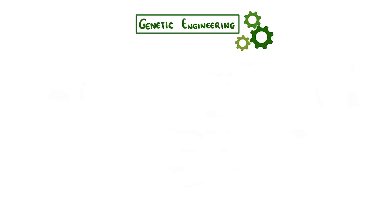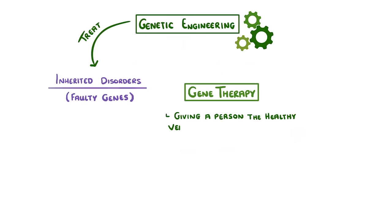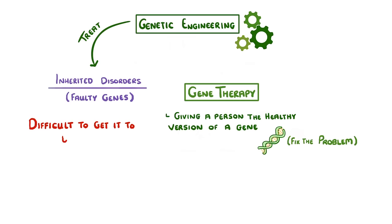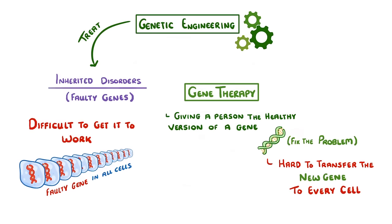Scientists are now researching how we could use this idea to treat some inherited disorders that are due to faulty genes. The idea, known as gene therapy, works by giving a person the healthy version of the gene, in the hope that it will fix the problem. But it's proving pretty difficult to actually get it to work. One of the problems is that the faulty gene would be in all of the person's cells, so to fix this, we'd have to transfer the new gene into every cell in the body, which is really difficult.